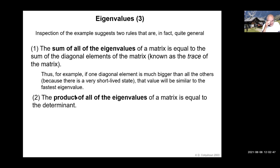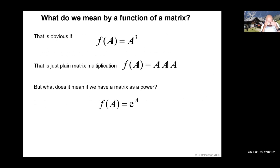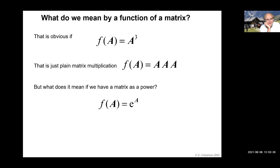Furthermore, the product of all the eigenvalues of a matrix is equal to the determinant of that matrix. Again, that's something you don't need to do by hand — all you have to do is use a routine that finds the determinant, rank, or inverse: you put in Q and out comes the inverse in numbers.